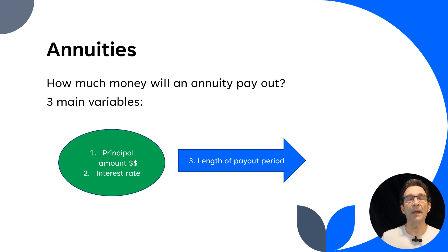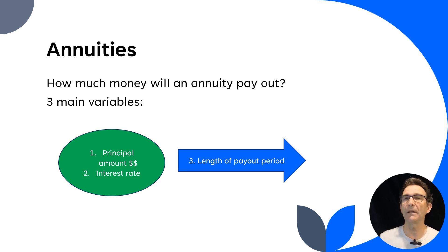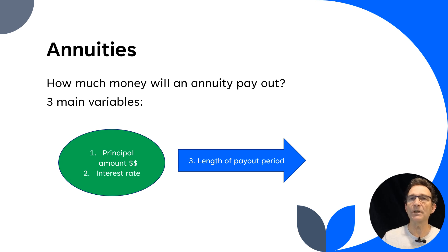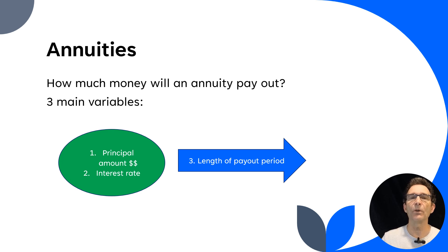The third variable is the length of the payout period. With an annuity, the purpose is for you to be able to grow money over time. People can start these when they're working, but they can actually start right at the point of retirement as well. In retirement, you get this payout period, which can be a defined length of time or could be the person's whole life. Remember these three main variables: the principal amount, the interest rate that defines how that amount grows, and the length of the payout period. All those things are adjustable and can change the terms of that contract.